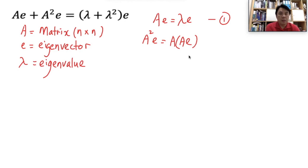We can split up the transformation matrix in this case. From here, from the identity number 1 here, we can rewrite this as A. We know Ae is actually lambda e.